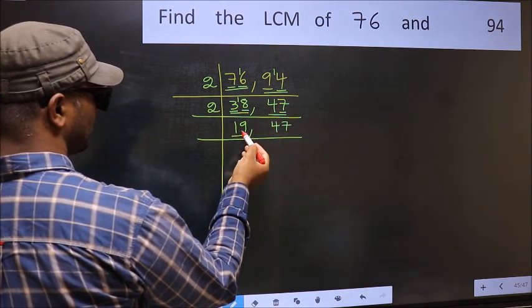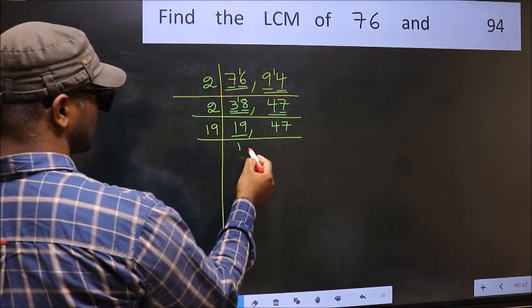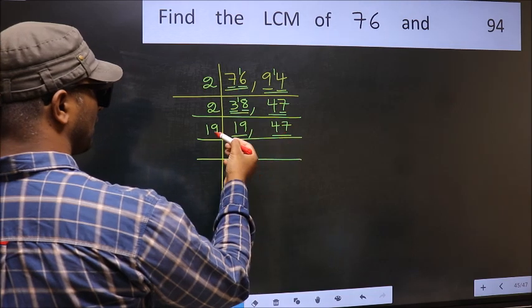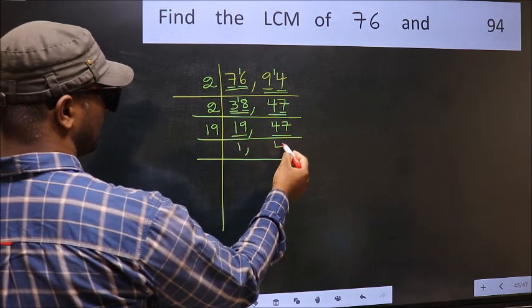Now here we have 19. 19 is a prime number, so 19 once 19. The other number, 47, not divisible by 19, so you write it down as it is.